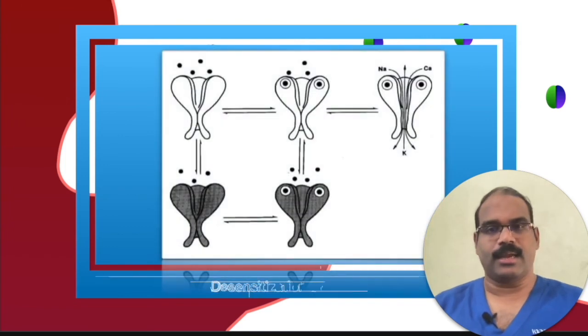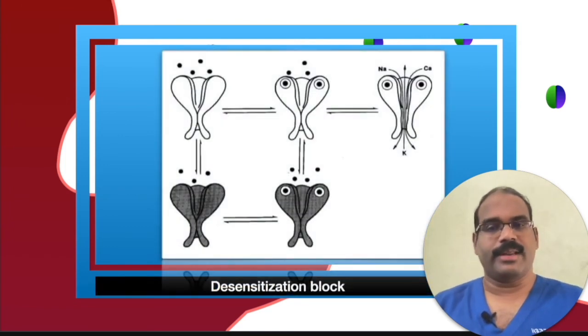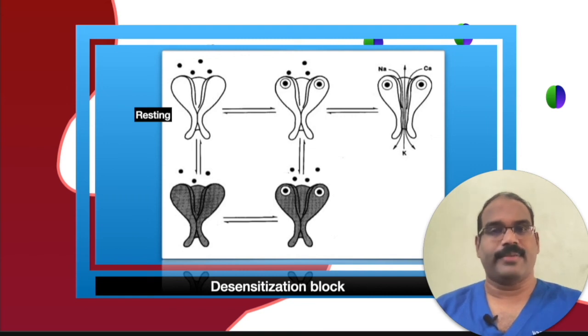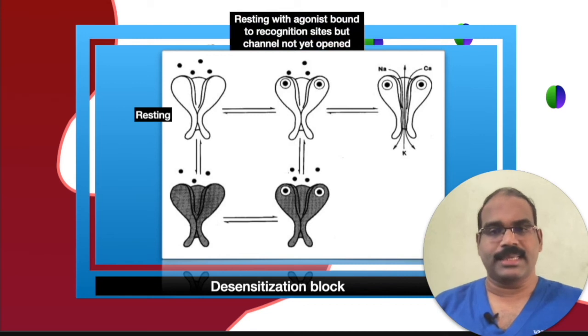Desensitization occurs when acetylcholine receptors are insensitive to the channel-opening effects of agonists, including acetylcholine itself. Receptors are in constant state of transition between resting and desensitized states, whether or not agonists are present. In the figure, you can find the receptor in the resting position with agonists bound to the recognition sites but channel not yet opened.